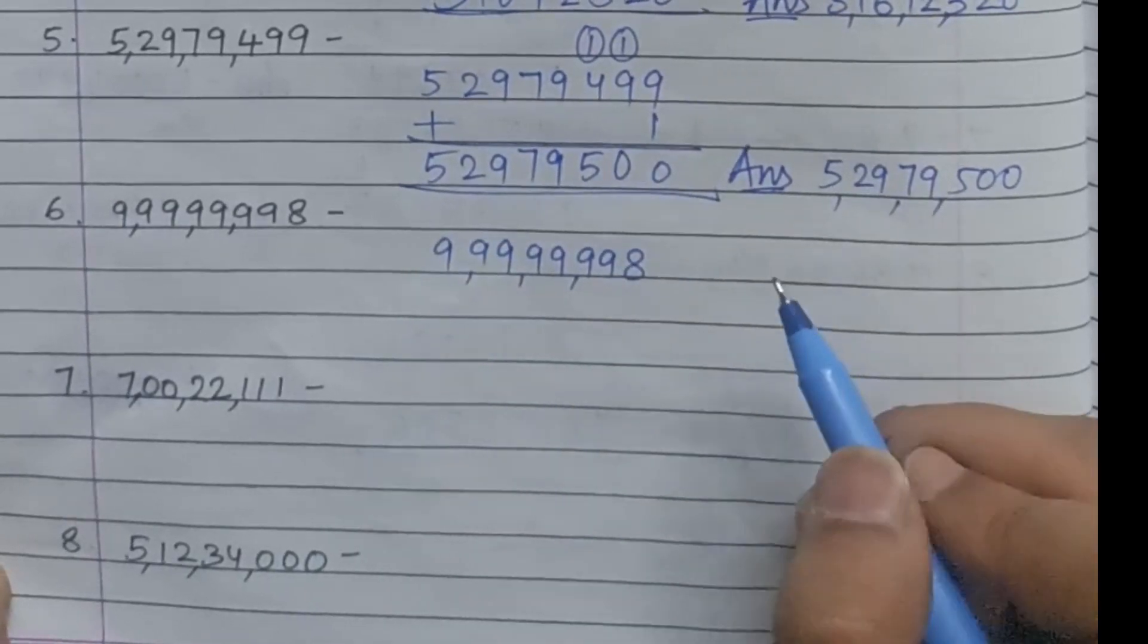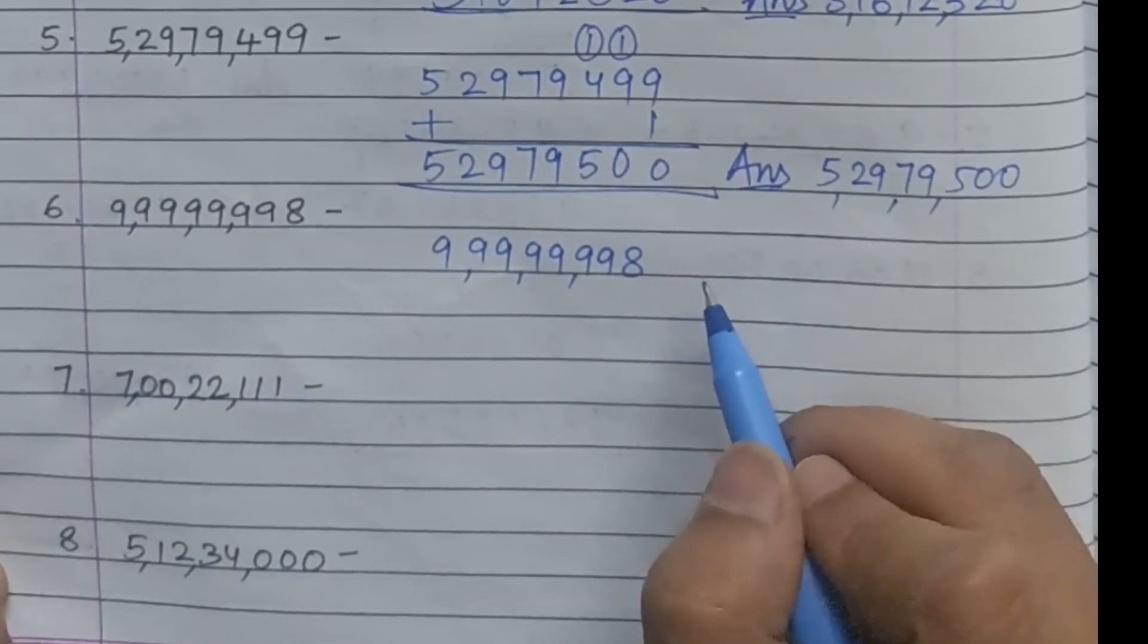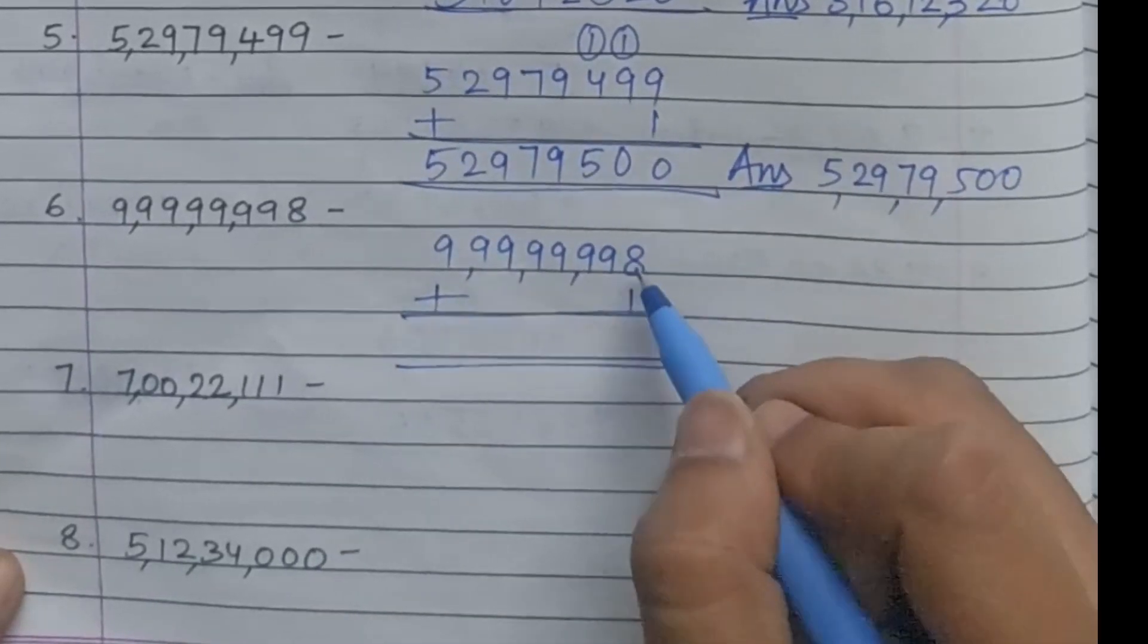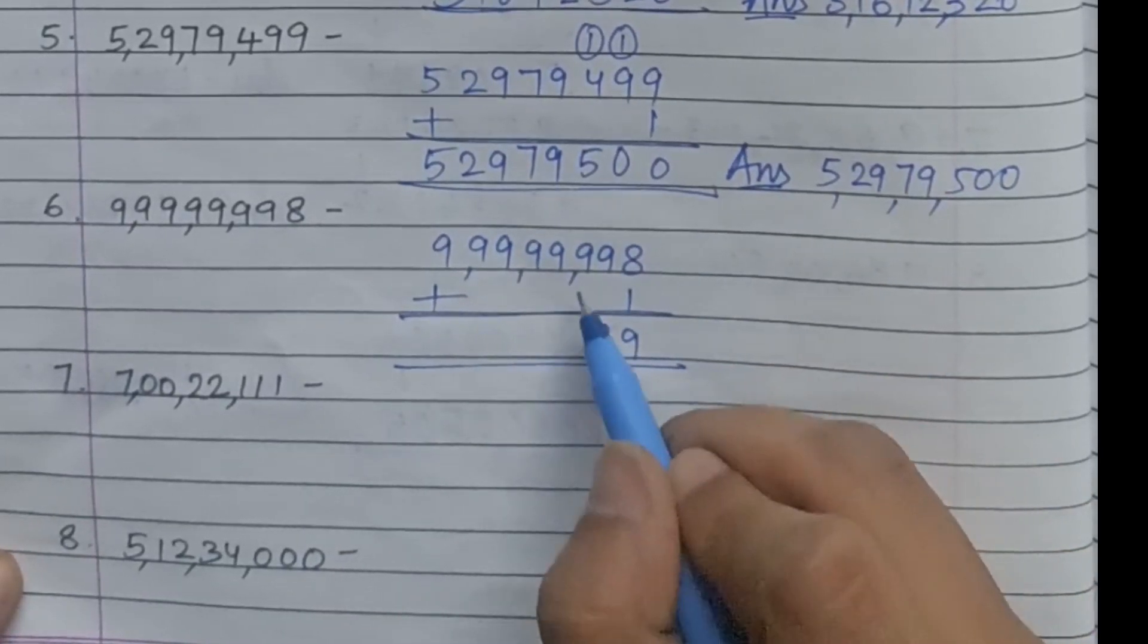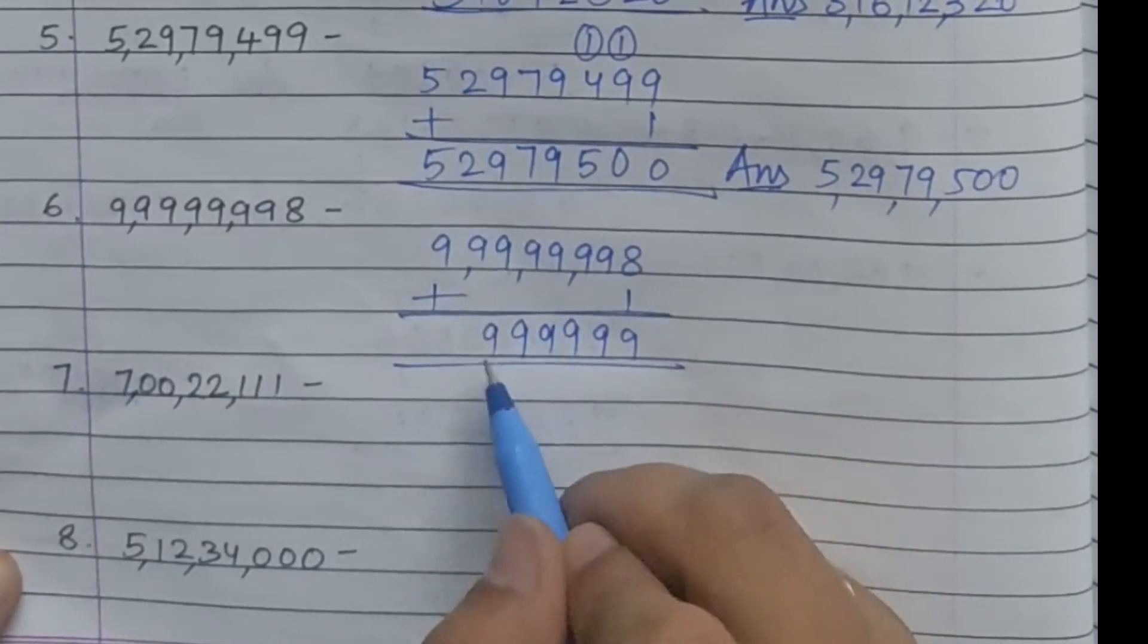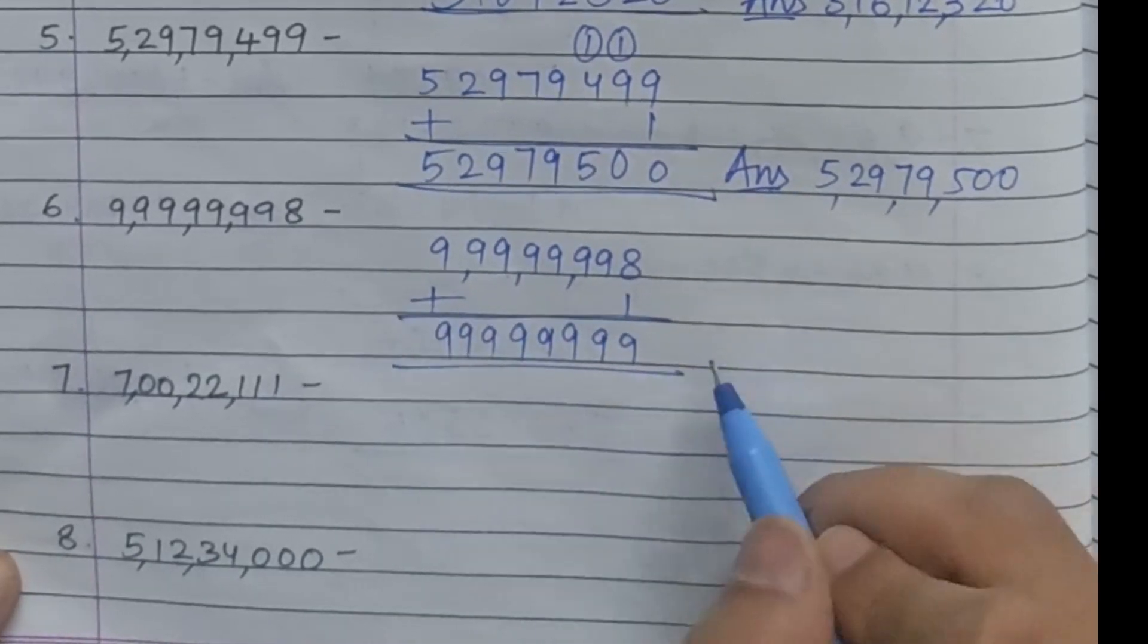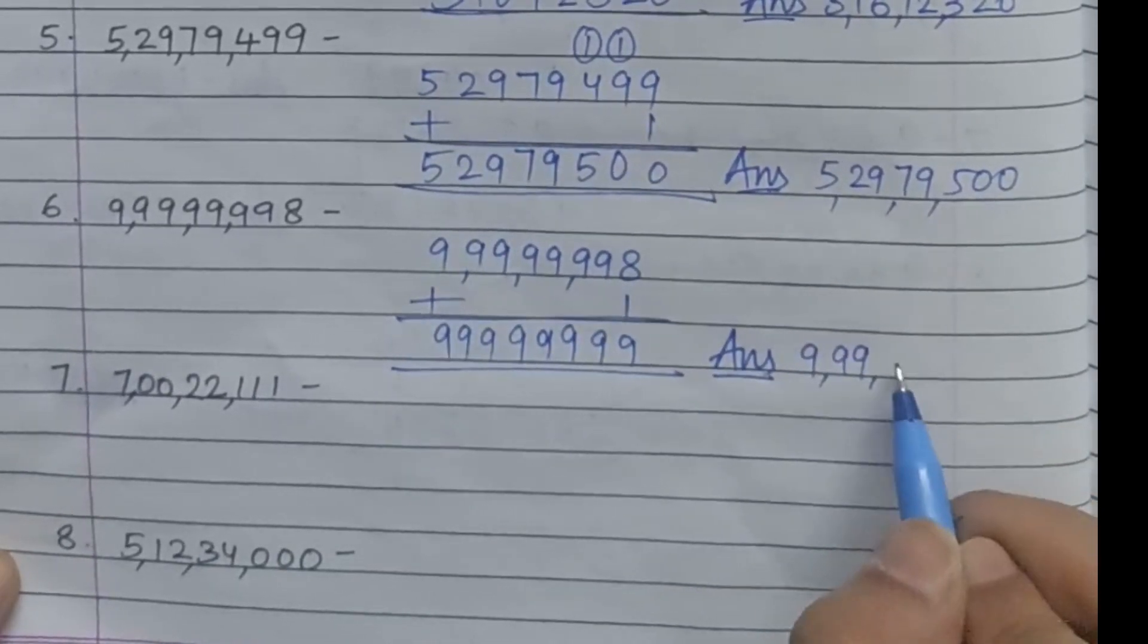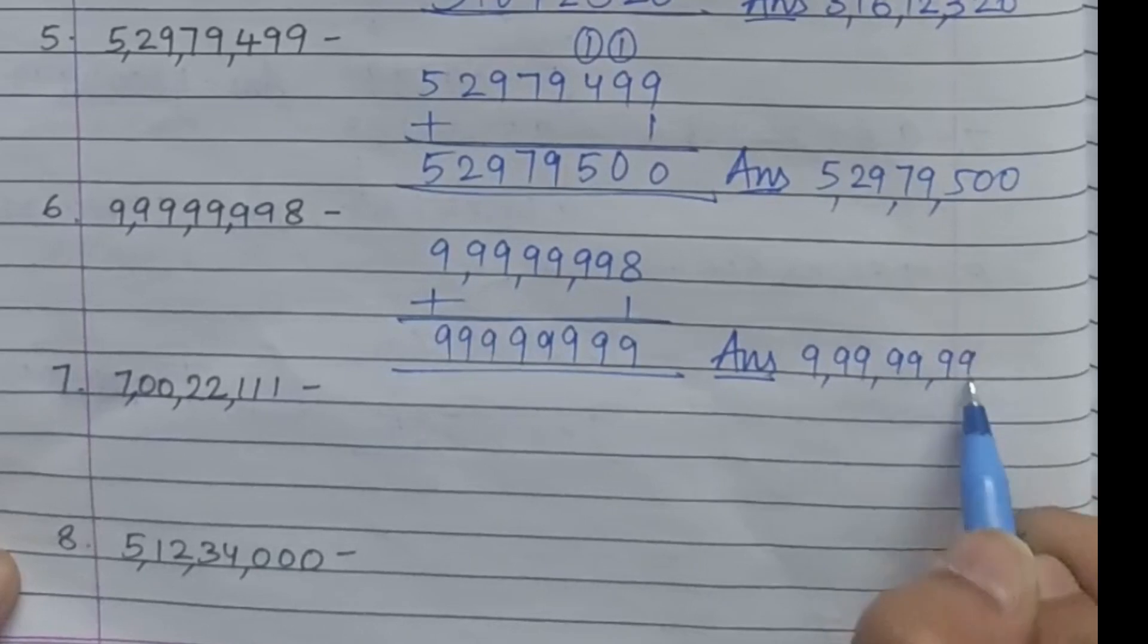Next question: 9,99,99,998. What will the successor be? 8 plus 1 is 9, then 9, 9, 9, 9, 9, 9, 9, and 9. So the answer is 9,99,99,999.